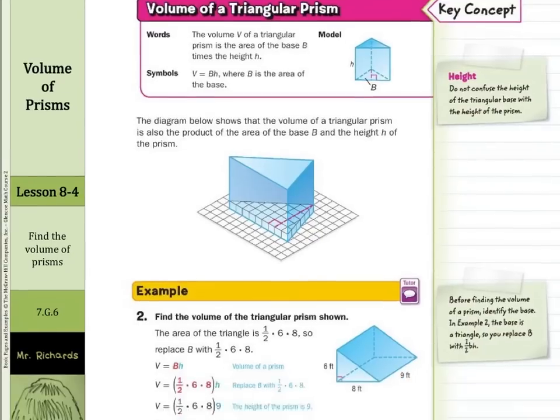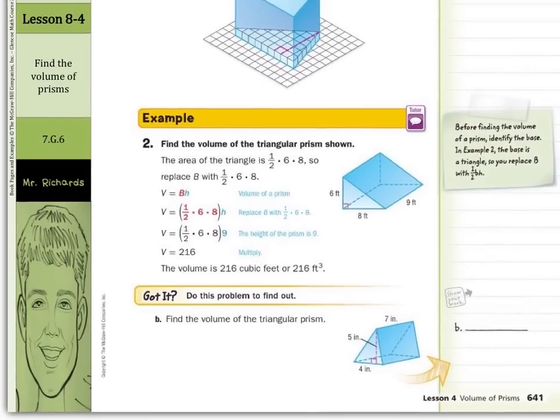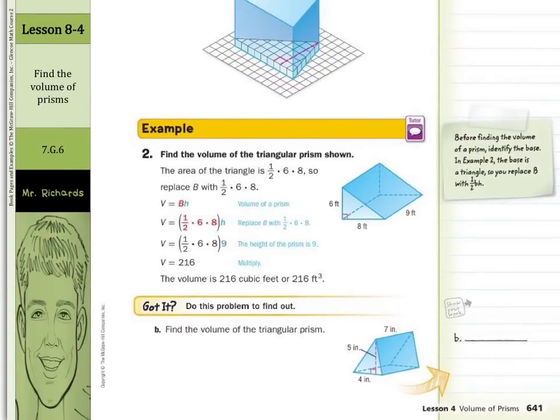So as we move on to our guided example: find the volume of the triangular prism shown. Well, here's our triangle, here's our base. Now volume equals the area of the base times the height, and I would actually include one more step right here. I would include: volume equals the area of the triangle is ½ base times height, then times the height of the prism.